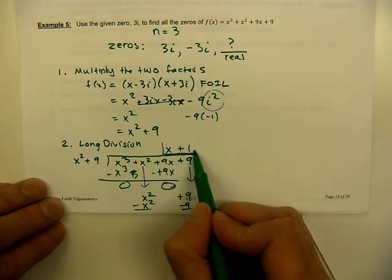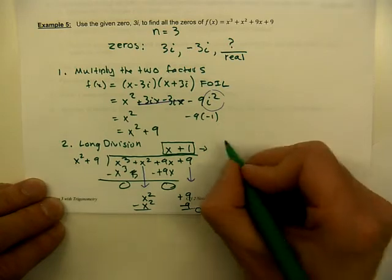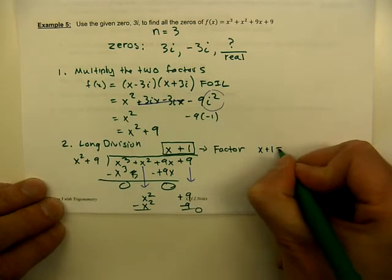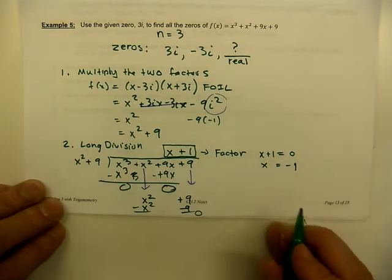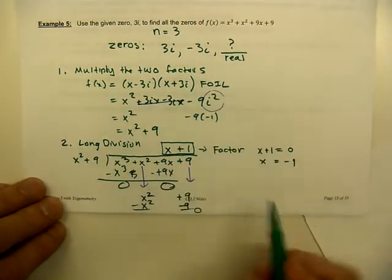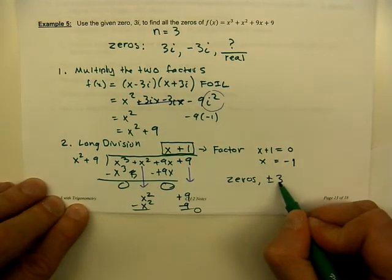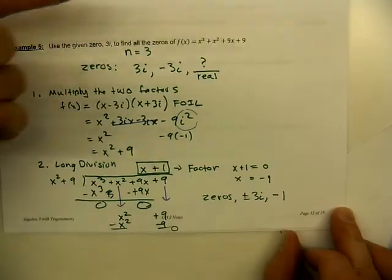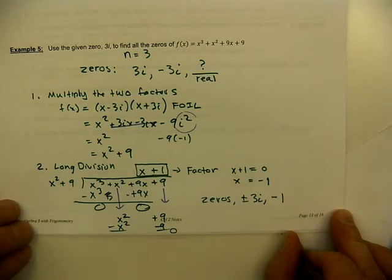The result of the long division is the final missing factor, which we set equal to zero to solve for x. That gives us the final real zero. So all the zeros of the polynomial are plus or minus 3i and negative one. These are the two main instances where we need to understand that imaginary values always come in conjugate pairs — when building a polynomial from given zeros, and when using a known imaginary zero to find the remaining real zero.